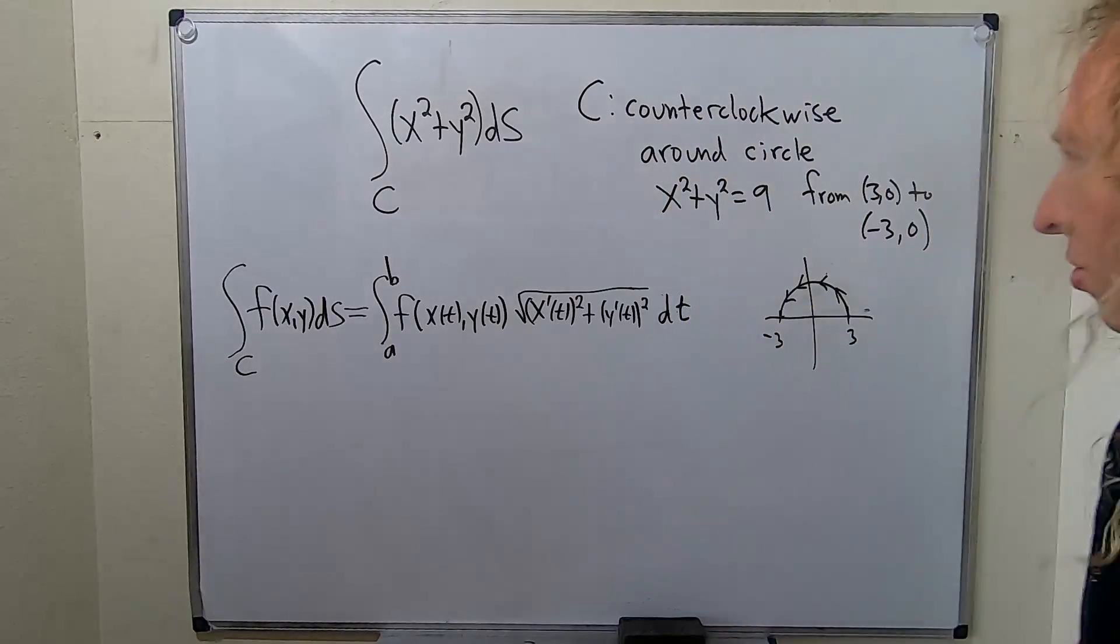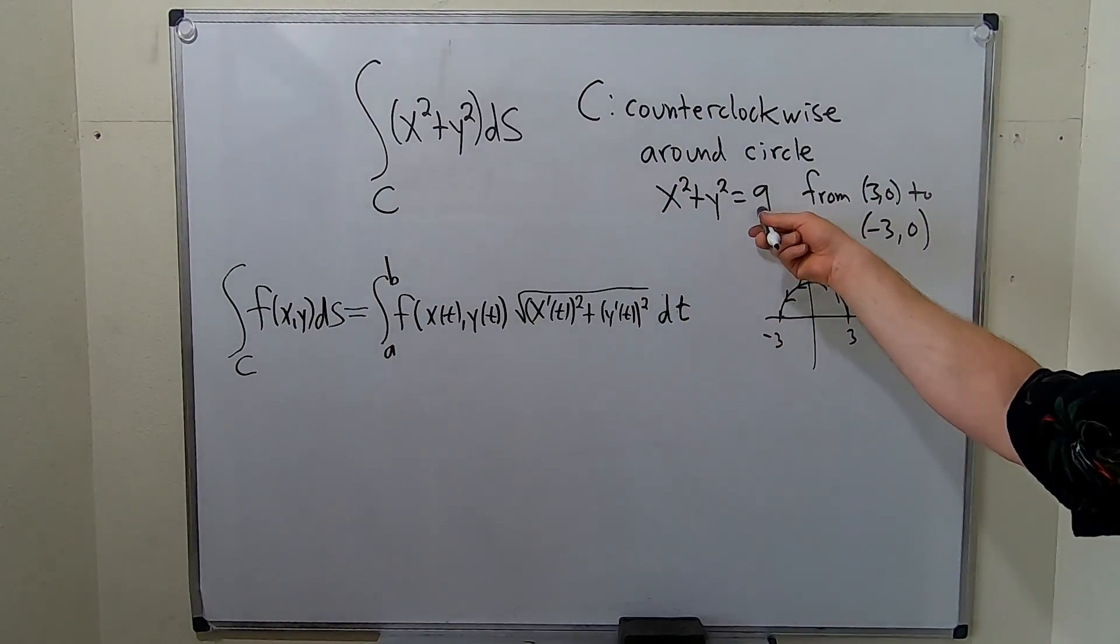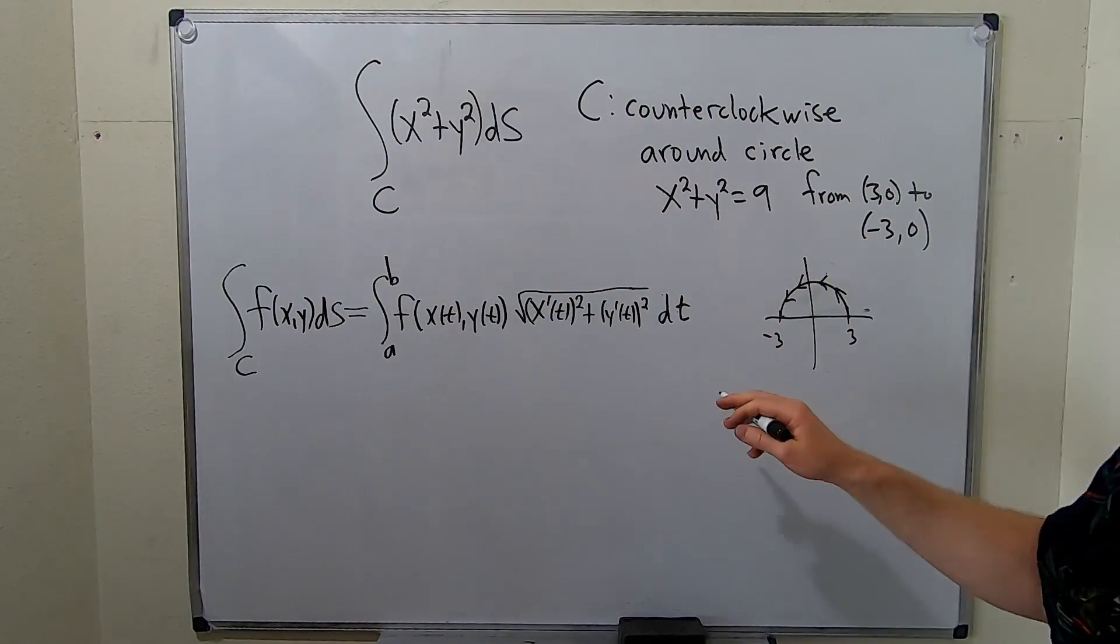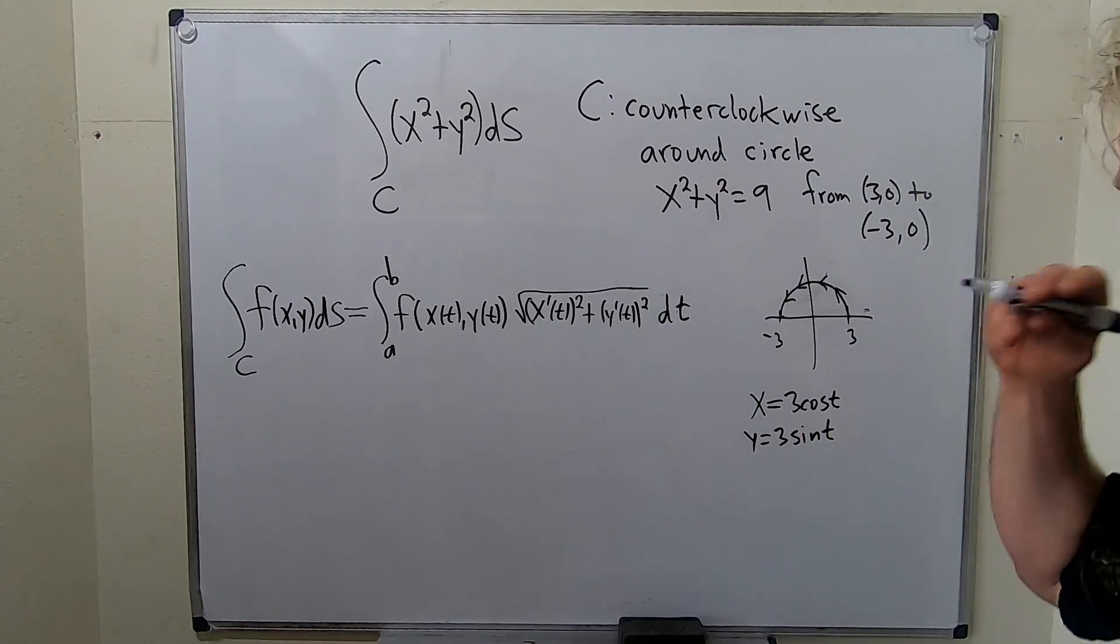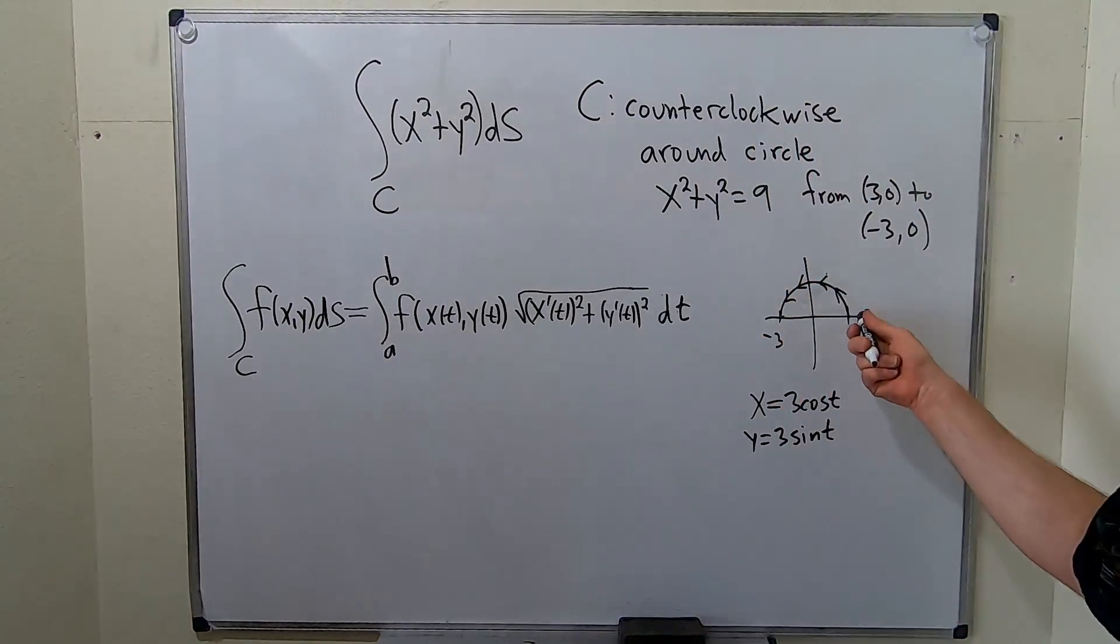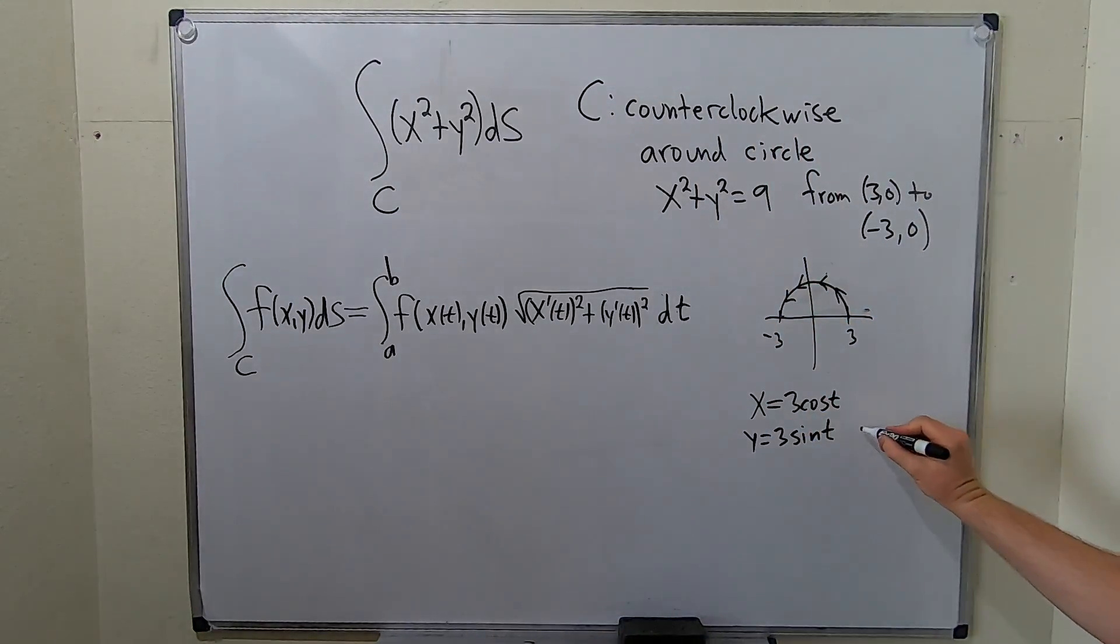So to parametrize a circle of radius 3, r is the square root of 9, which is 3, we can simply use these equations: x equals 3 cosine t, y equals 3 sine t. This will give us the entire circle. So we're only going from 0 to pi, so our t here will go from 0 to pi.